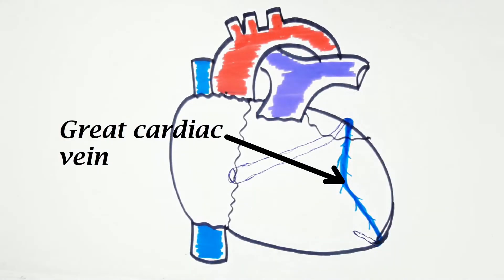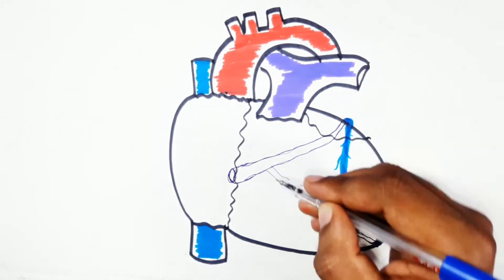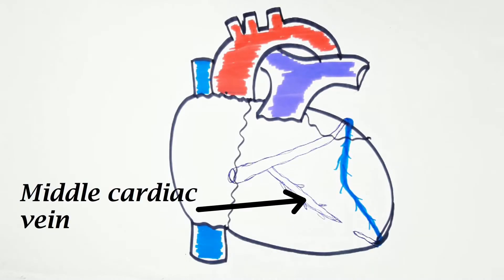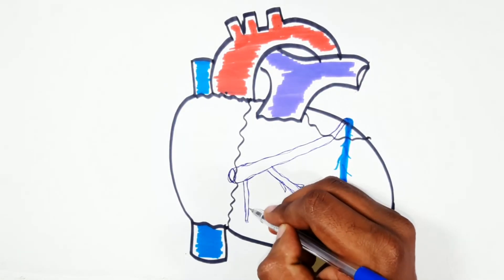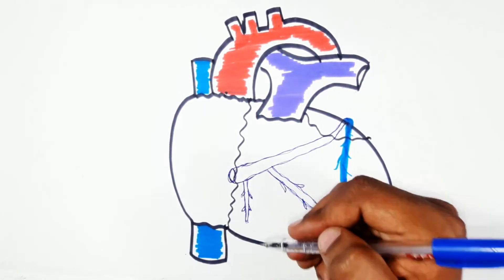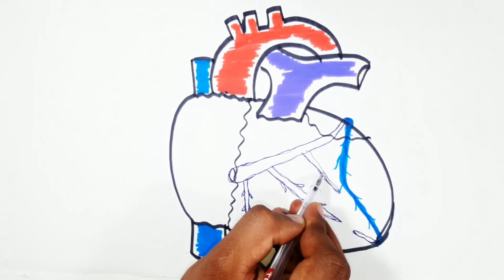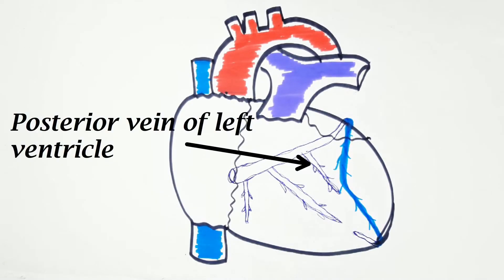The great cardiac vein receives a number of left ventricular tributaries in its course. The second is the middle cardiac vein, which accompanies the posterior interventricular artery and opens near the termination of the coronary sinus. The third is the small cardiac vein, which opens into the coronary sinus near its atrial end. The fourth is the posterior vein of the left ventricle, which joins the coronary sinus to the left of the middle cardiac vein.